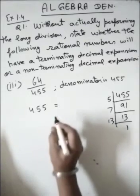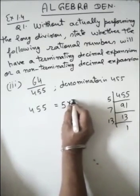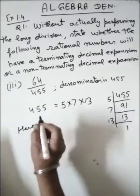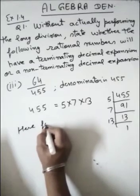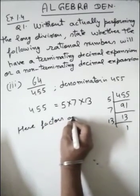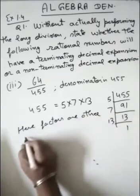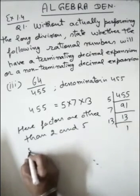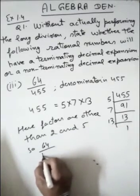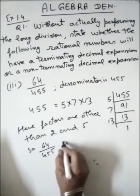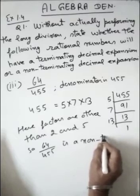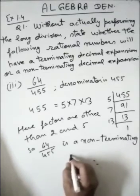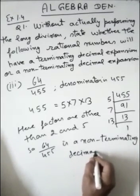Now prime factorization of 455 is 5 into 7 into 13. So here, factors are other than 2 and 5. Therefore, 64 upon 455 is a non-terminating decimal number.